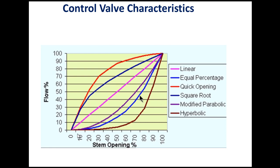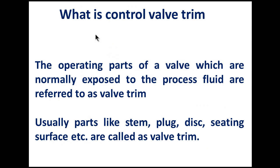Control valve is a device used to regulate the flow of liquid or gas. Control valve characteristics: three major types — quick opening, linear, and equal percentage — based on percentage of stem opening and percentage of flow. Quick opening means maximum flow is achieved with minimal stem opening. Modified characteristics include square root, modified parabolic, and hyperbolic. Control valve trim refers to the operating parts of a control valve normally exposed to the process fluid — components like stem, plug, disc, and seating surface.